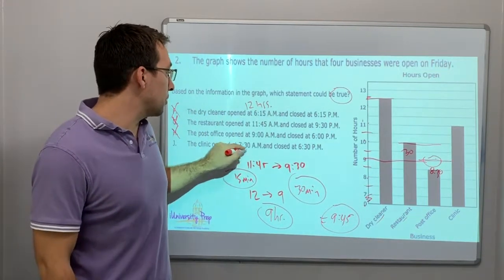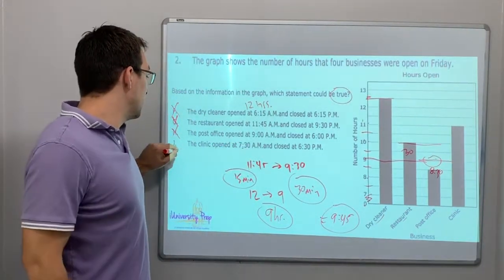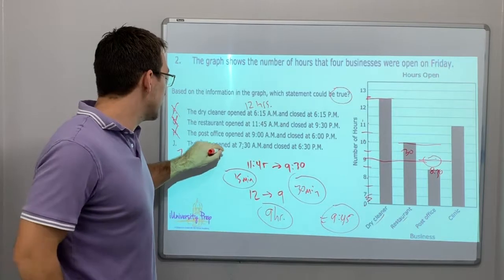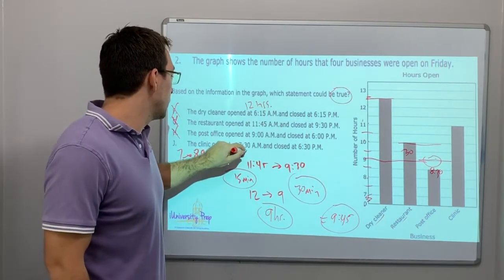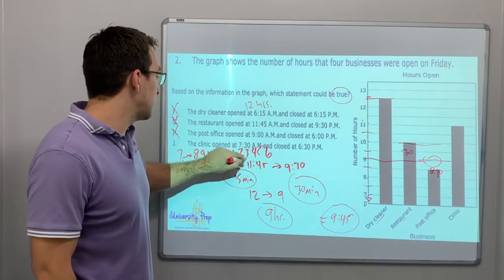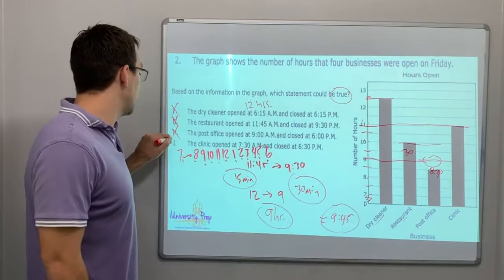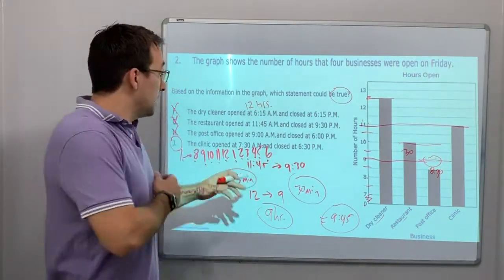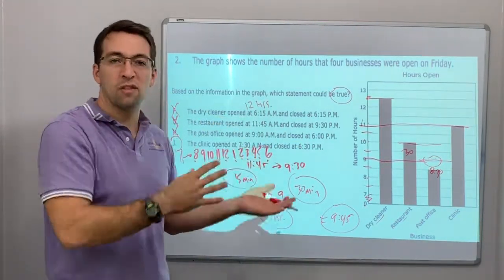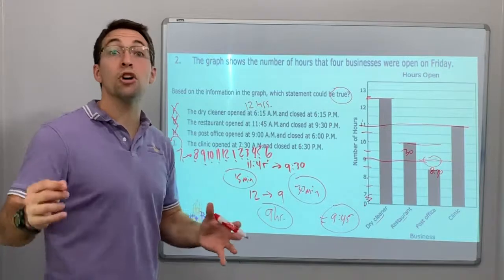The clinic opened at 7:30 and closed at 6:30 p.m. Let's count: 7:30 to 6:30 — 8, 9, 10, 11, 12, 1, 2, 3, 4, 5, 6 — that's 11 hours. That's correct! A quick trick: change it from 7:30 to 7 and 6:30 to 6 — same duration — then count on your fingers. Mark up your test.